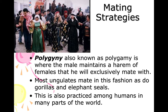Polygamy is where the male maintains a harem of females that he exclusively mates with. This is also practiced among humans in many parts of the world. Most ungulates mate in this fashion, as do gorillas and elephant seals — they maintain harems.